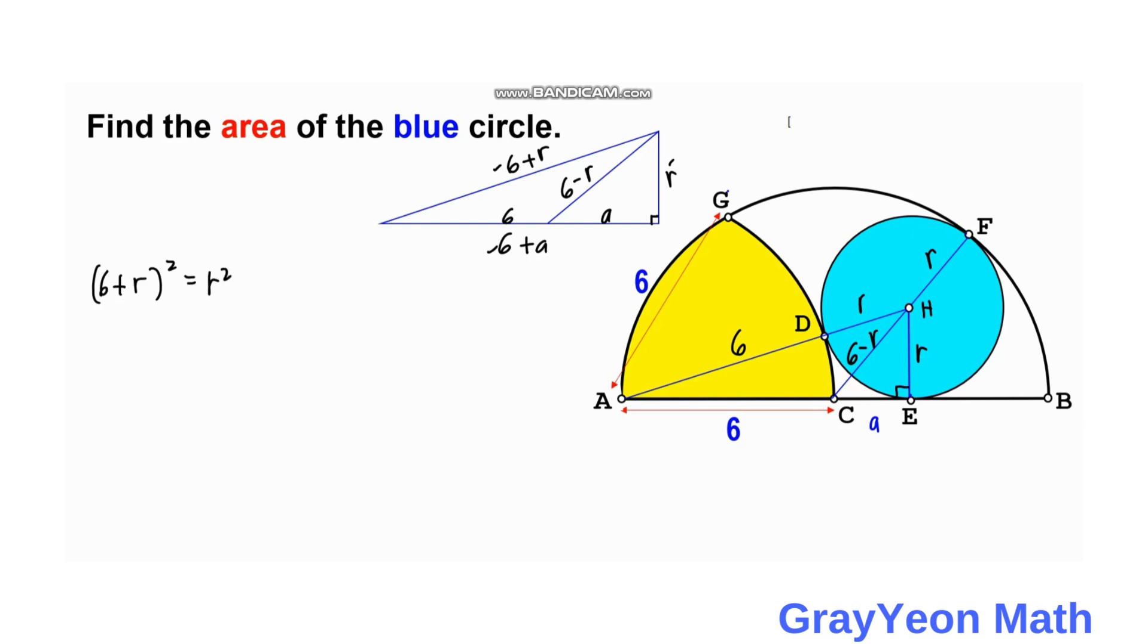equals R squared plus (6 plus A) squared. And for the smaller triangle we have (6 minus R) squared equals R squared plus A squared.